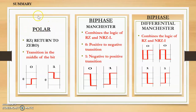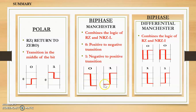To summarize: polar RZ has a transition in the middle of each bit, where 0 is on the negative side and 1 on the positive side. In biphase Manchester, 0 transitions from positive to negative (Z form) and 1 from negative to positive (opposite Z). In differential Manchester, 0 may be represented in either same-side form depending on the signal, and 1 in either crossing form. The other types of encoding schemes will be discussed in the next video.